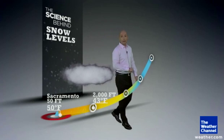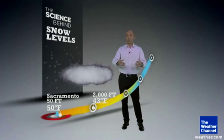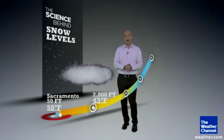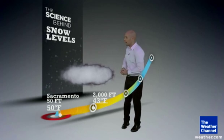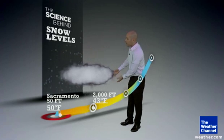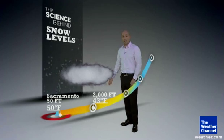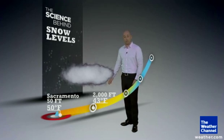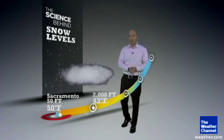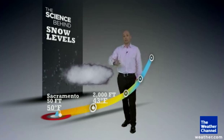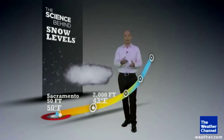But start heading up in elevation and things change. The environment itself will cool down just by heading up in elevation. And by 2,000 feet, you'd be at about 43 degrees. You lose about three and a half degrees for every thousand feet change in elevation.